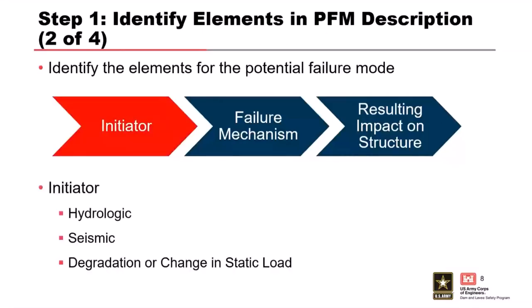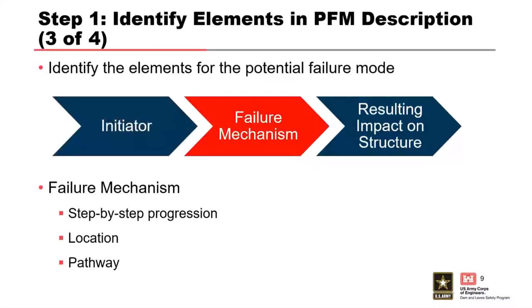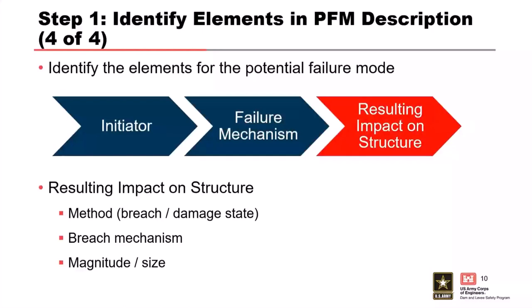Identify the initiator for the potential failure mode. Is the PFM initiated by a hydrologic event, a seismic event, degradation of a material, or a change in the static loading? Next is the failure mechanism — define the step-by-step progression for your failure mode. Identify the location of the failure mode and the failure pathway that is controlling the probability of failure. The final element is the resulting impact to the structure: are you evaluating a full breach or some other damaged state? The breach mechanism, magnitude, and breach size all impact the consequences.